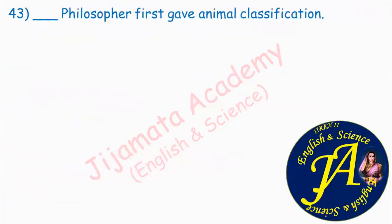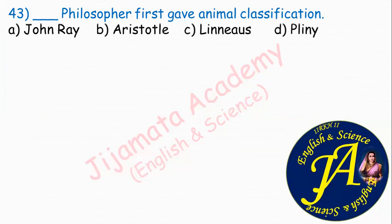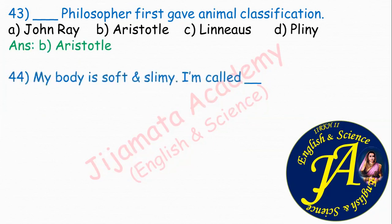Dash philosopher first gave animal classification. Options are John Ray, Aristotle, Linnaeus, Pliny. Correct answer is option B: Aristotle first gave animal classification.